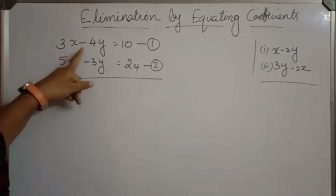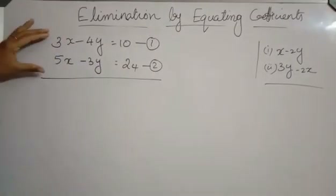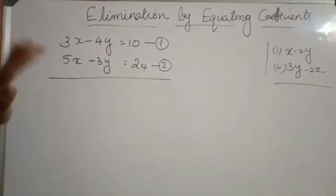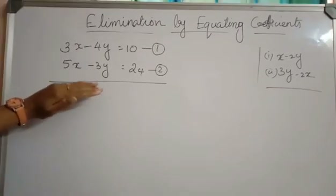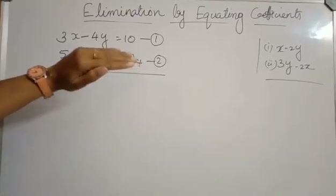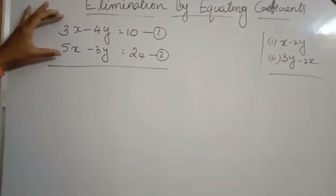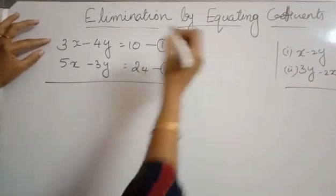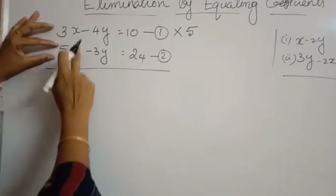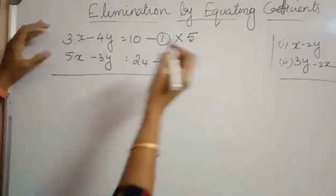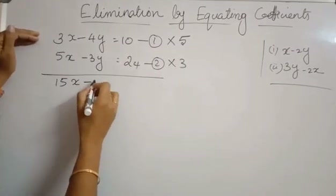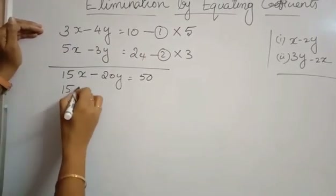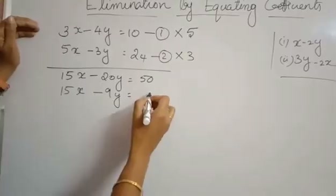Consider another question: 3x minus 4y equals 10 and 5x minus 3y equals 24. In this case, we cannot multiply just one equation by the coefficient of a single variable, since both coefficients are different. So we multiply both equations by the coefficient of the corresponding variable. We multiply the first equation by 5 and the second by 3. This gives the new equations: 15x minus 20y equals 50, and 15x minus 9y equals 72.